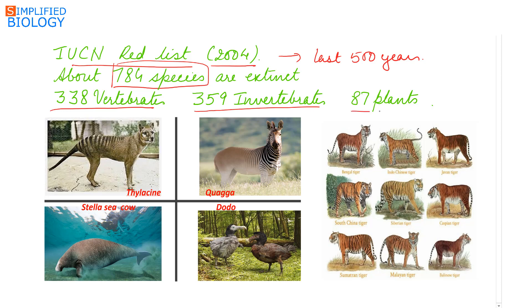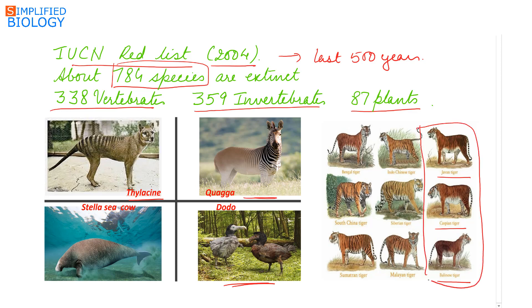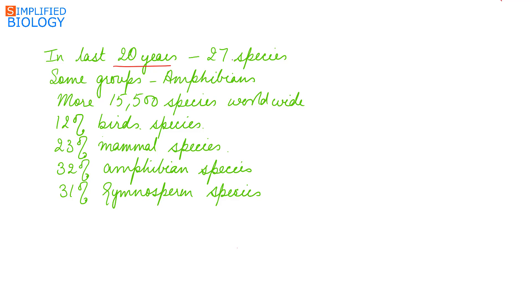Recent extinctions include the dodo in Mauritius, the quagga in Africa, the thylacine in Australia, and the Steller's sea cow in Russia. Of the nine subspecies of tiger, three are extinct: the Java tiger, Caspian tiger, and Bali tiger, leaving just six subspecies. In the last 20 years, 27 species have disappeared.